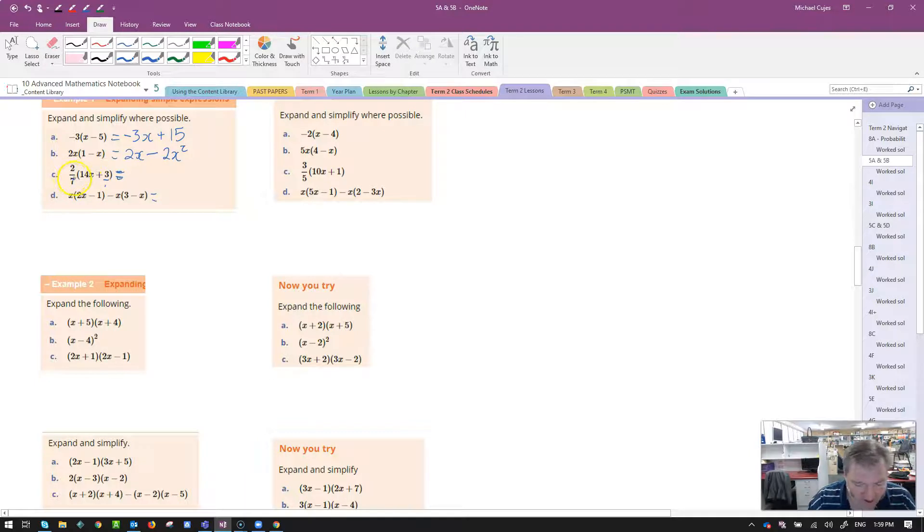2 sevenths multiplied by 14x. Remember, I can cancel. 7 goes into 14 twice. So it's going to be 2 times 2x is going to give me 4x for the first term. 2 sevenths times positive 3, nothing to cancel there. So top times top, 3 times 2 is 6, and 7 times 1 is 7. So the answer to that would be 4x plus 6 sevenths.